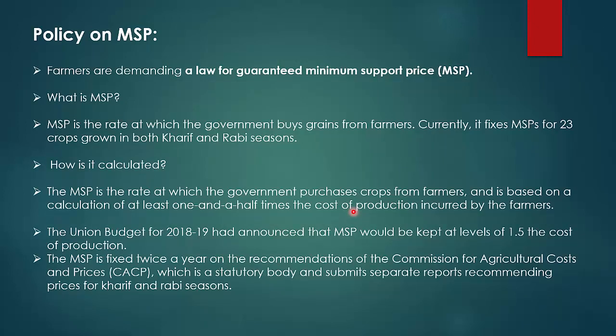The next topic is policy on MSP. After repealing the farm laws, farmers are still protesting. Their remaining demands are: removal of criminal charges filed during the protest, compensation for those killed, and most importantly a legal guarantee on MSP. Farmers are demanding a law for guaranteed minimum support price. MSP is the rate at which the government buys grains from farmers — currently it fixes MSP for 23 crops in both Kharif and Rabi seasons.